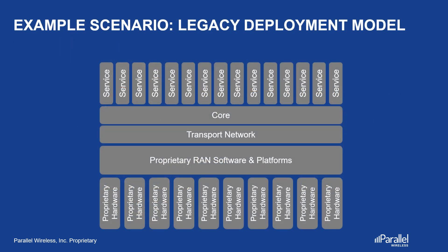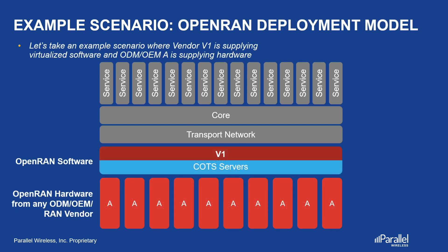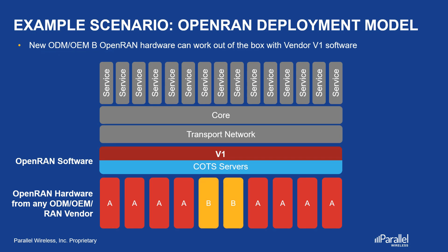To explain this concept, let's look at an example scenario. A simplified view of a typical network is shown with proprietary hardware, RAN software and platforms, transport network, core, and services. Let's assume the service provider has deployed Open RAN software from vendor V1 running on COTS servers, and for the hardware they are using RRHs from an OEM/ODM vendor A. Now, let's say they are upgrading or deploying new sites and decided to use RRUs from another vendor B. These should work with the software from vendor V1 out of the box because of open interfaces.